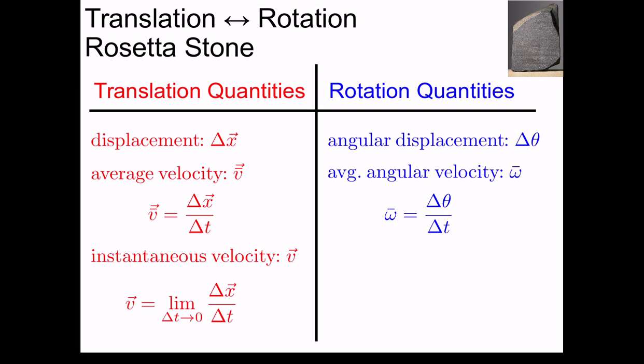Similarly, for rotation, we have the instantaneous angular velocity, omega, which we define as delta theta over delta t, where delta t gets as small as we want. So you can see that we're starting to build a Rosetta Stone between the translation quantities and the rotation quantities. I suggest you keep one of these in your notebook, as we will be adding to it as we go through the unit.